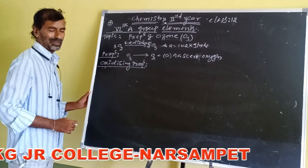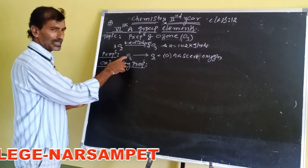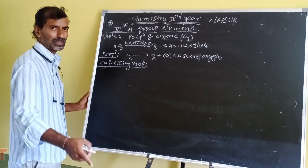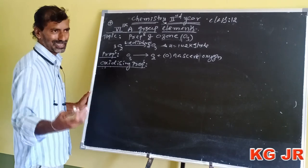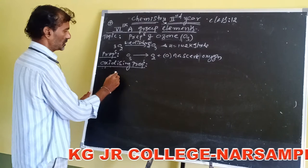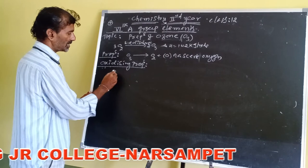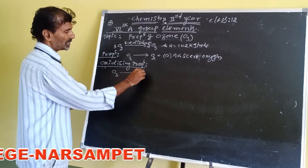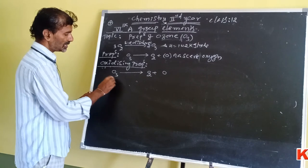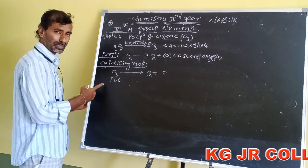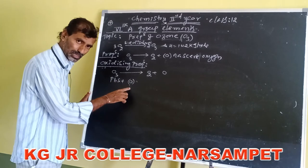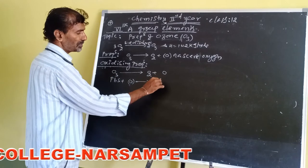First oxidizing property: ozone oxidizes lead sulfide (PbS) to lead sulfate (PbSO₄). Ozone gives rise to O₂ plus nascent oxygen, and lead sulfide plus nascent oxygen gives rise to PbSO₄.